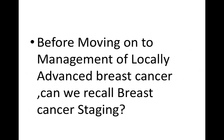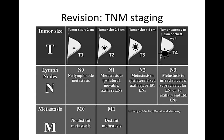Before moving on to management of locally advanced breast cancer, let's recall breast cancer staging. We have the TNM staging system, based on tumor size, lymph nodes, and metastasis. T1 is tumor size less than 2 cm, T2 is 2 to 5 cm, T3 is more than 5 cm, and T4 is when the tumor extends to the skin or chest wall.